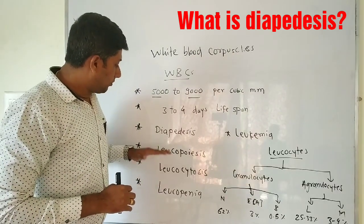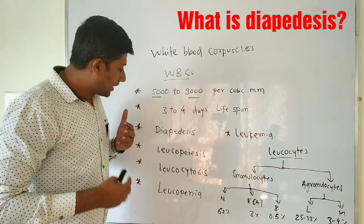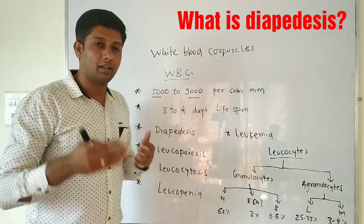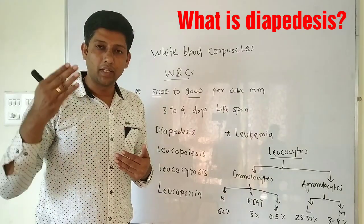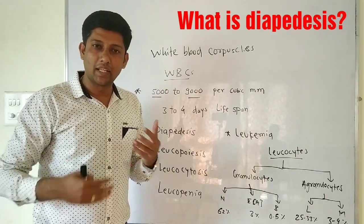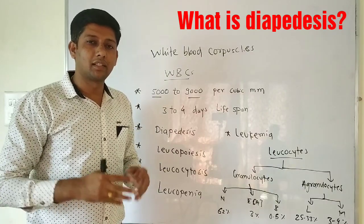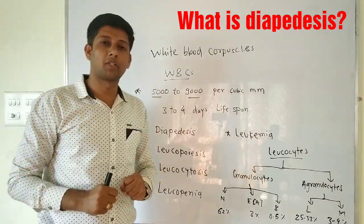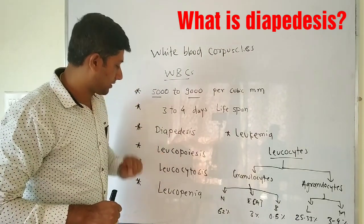WBCs are generated in the red bone marrow, in the bone marrow, in the Peyer's patches, and in the thymus. These are the various sites where WBCs get synthesized. The process of formation of WBCs is called leukopoiesis.